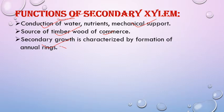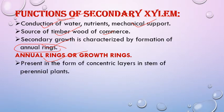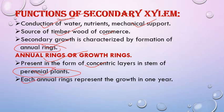Secondary growth is characterized by formation of annual rings, also called growth rings. Annual means in a full year — based on seasonal changes, growth occurs in a year. These combine to form one patch known as an annual ring. Annual rings are present in the form of concentric layers in the stem of perennial plants — plants that complete their life cycle in more than one year. Each annual ring represents growth in one year.